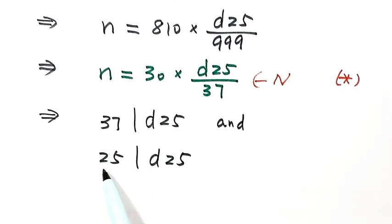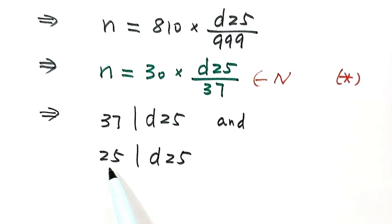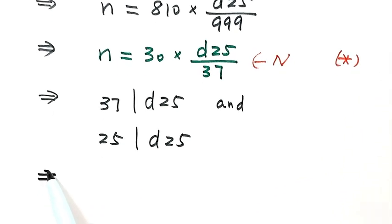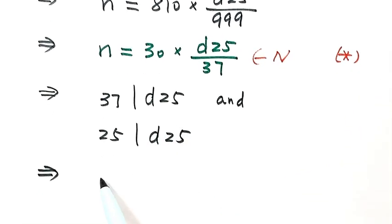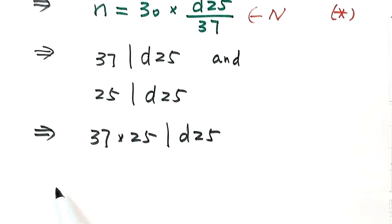Because 37 and 25 are co-prime, that means 37 times 25 equals 925, so 925 also divides d25.